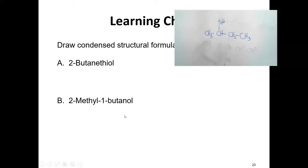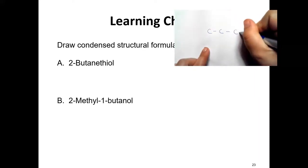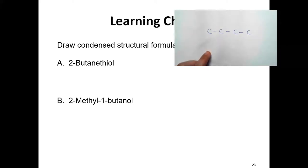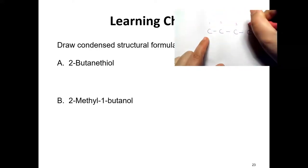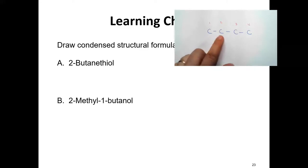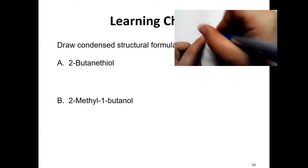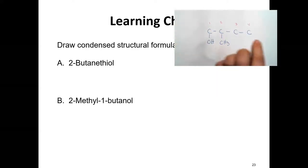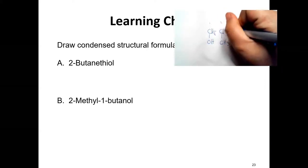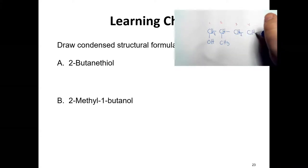Now let's draw a 2-methyl-1-butanol — this is an alcohol, not a thiol. Butanol means four carbons: one, two, three, four. Number them. On carbon two, there's a methyl group (CH3), and on carbon one is the OH. Make sure carbon has four bonds: this gives us a CH2 bonded to the chain. There's our 2-methyl-1-butanol.